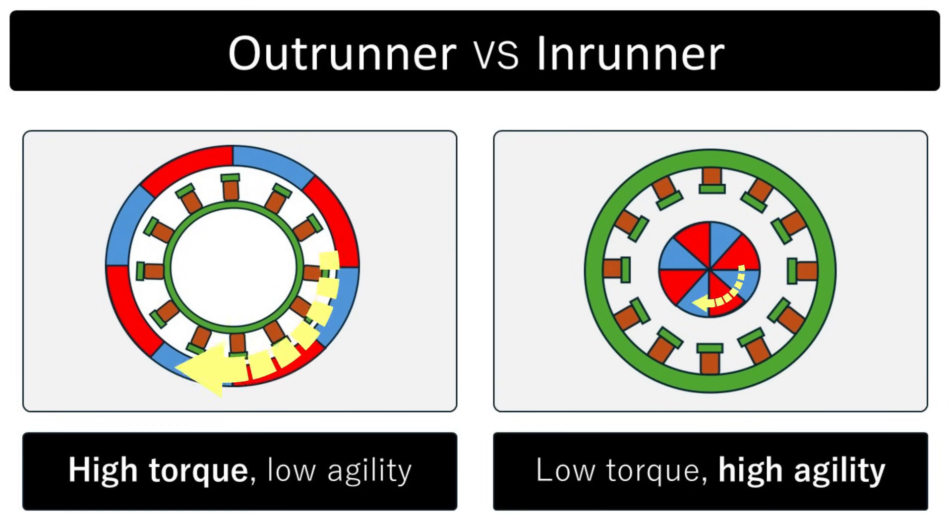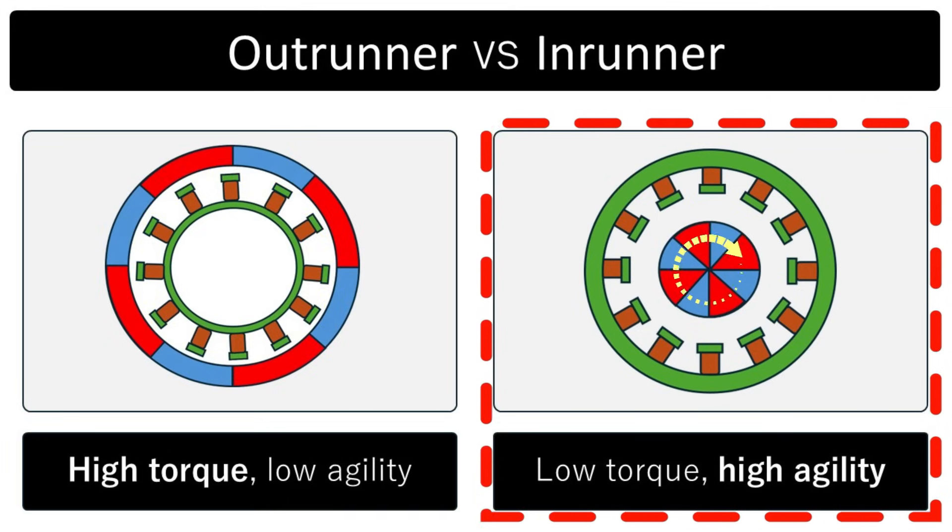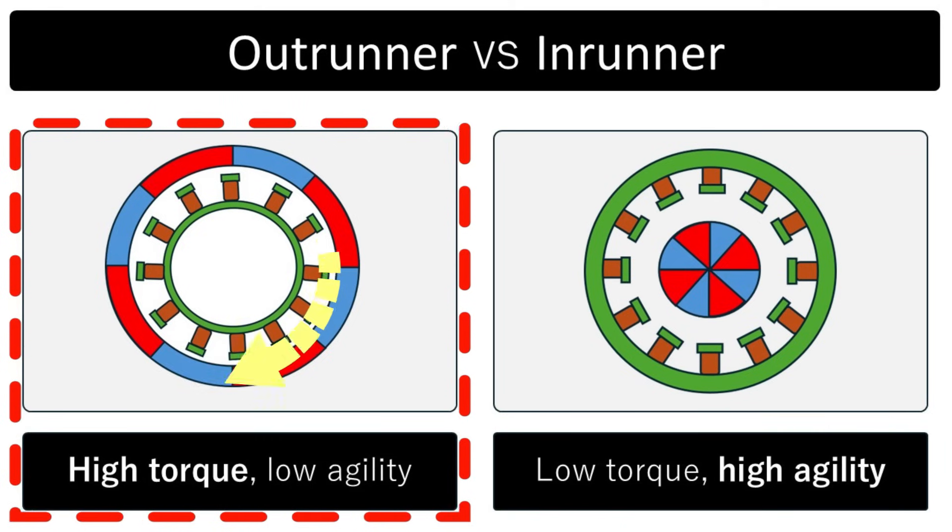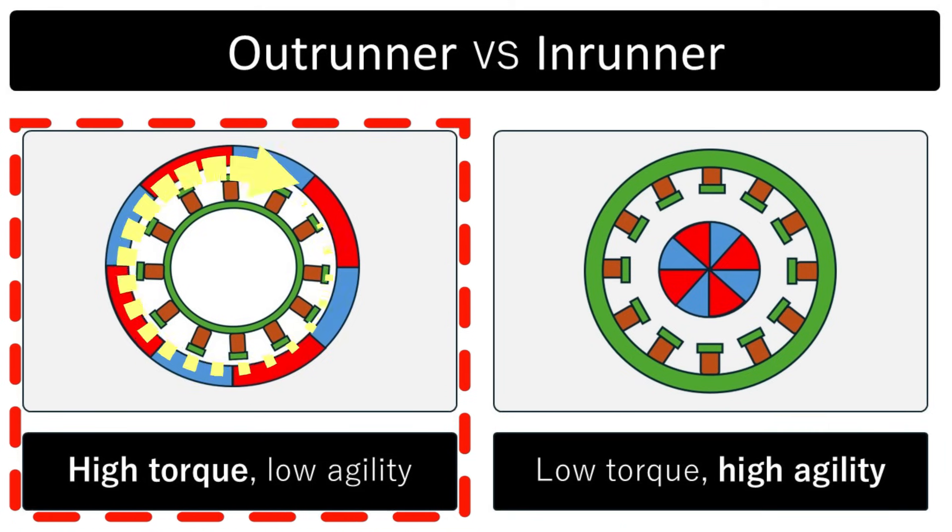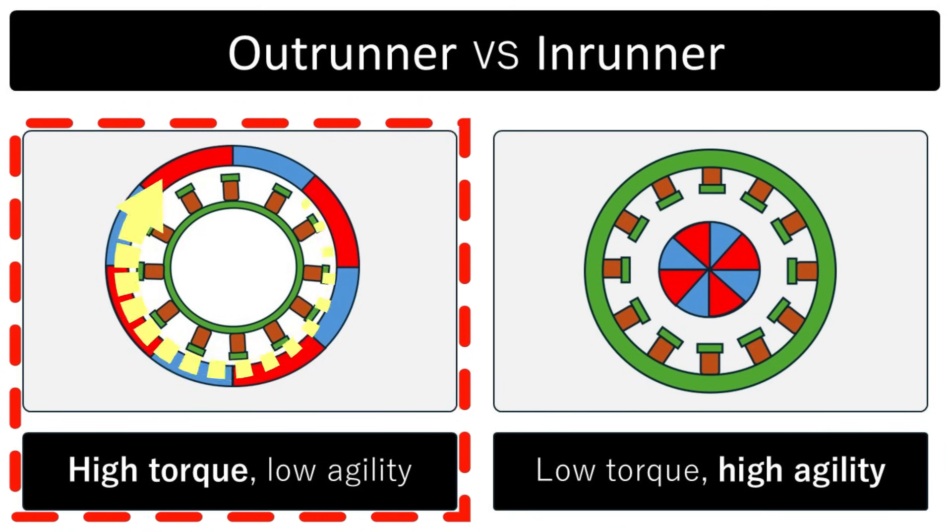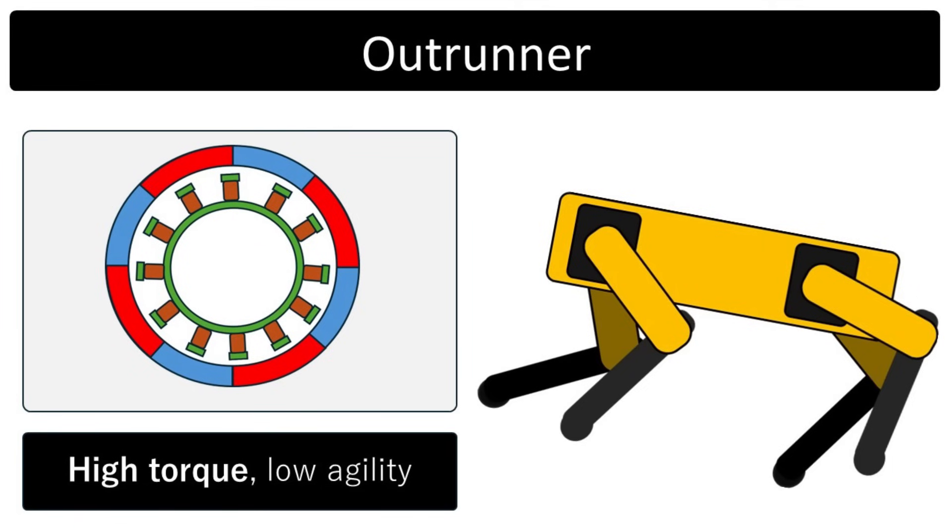A BLDC motor has a rotor with permanent magnets, and you can place that rotor on the inside (in-runner) or the outside (outrunner). An in-runner rotor has less inertia, making it ideal for ultra-fast response. An outrunner rotor generates higher torque because the force acts over a larger radius. For a quadruped robot joint that needs moderate speed and high torque, an outrunner design is more suitable.